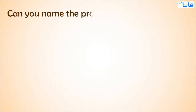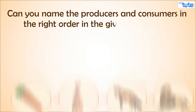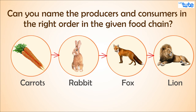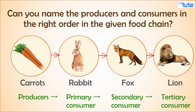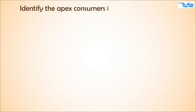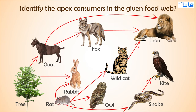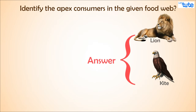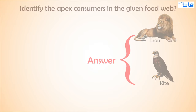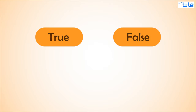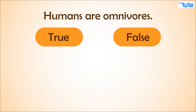Can you name the producers and consumers in the right order in the given food chain? Write your answers in your notebook. Here is another question: identify the apex consumers in the given food web. State whether true or false: humans are omnivores.